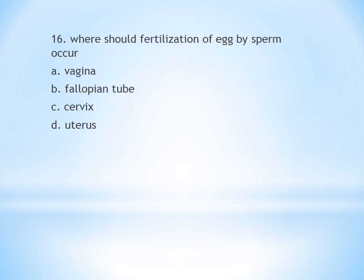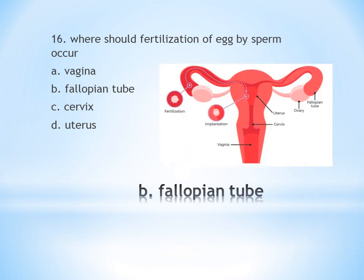Sixteenth question: Where does fertilization of egg by sperm occur? A. Vagina, B. Fallopian tube, C. Cervix, D. Uterus. Fertilization occurs in the fallopian tube. Implantation occurs in the uterus. Answer is B.